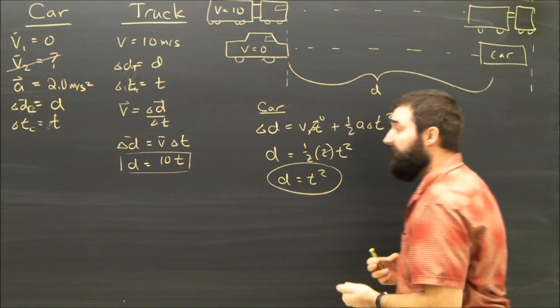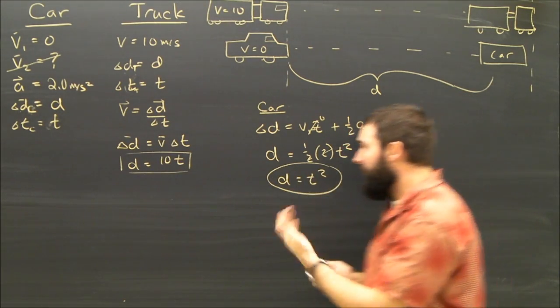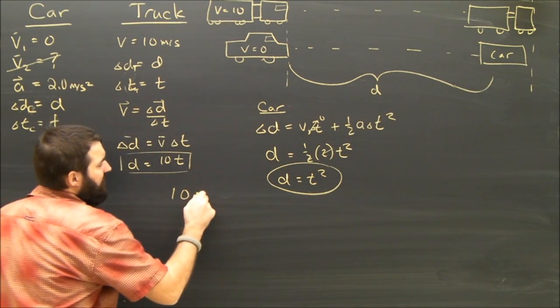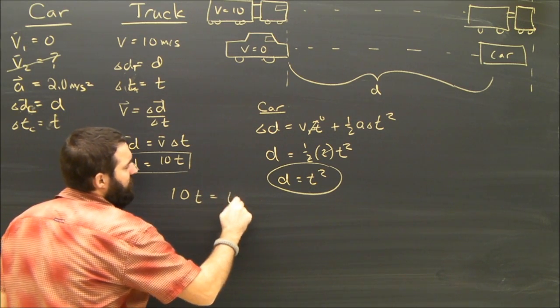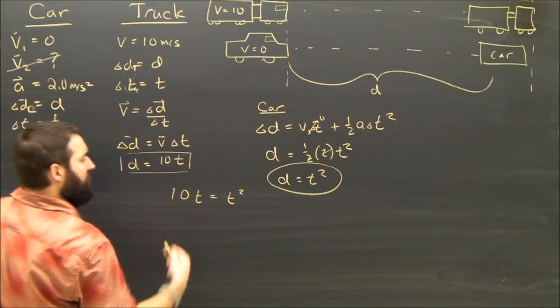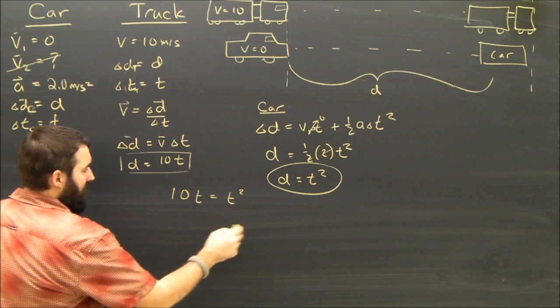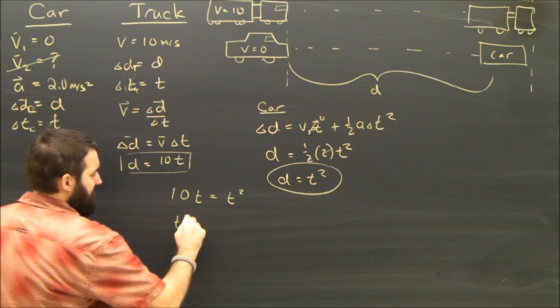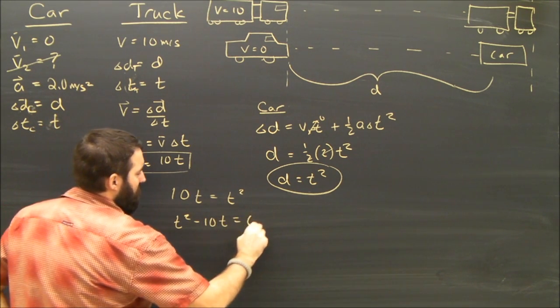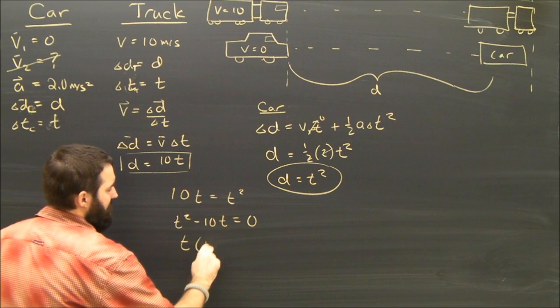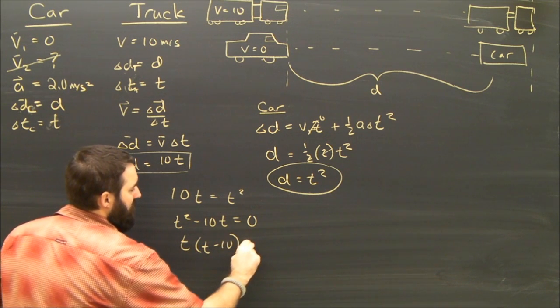If D equals 10 T, and D equals T squared, then clearly 10 T is equal to T squared. I just put these two equations together. Rearranging this, I see that T squared minus 10 T equals zero, I see that T times T minus 10 equals zero,